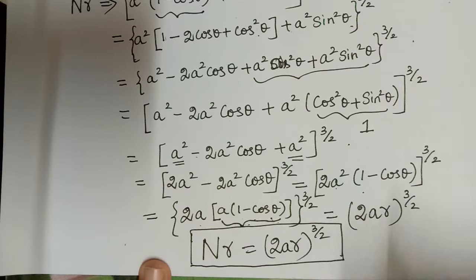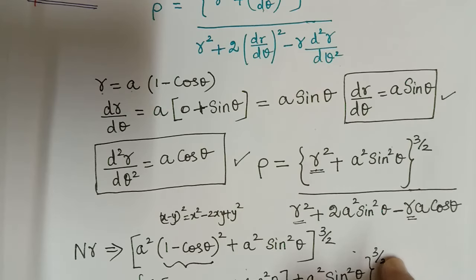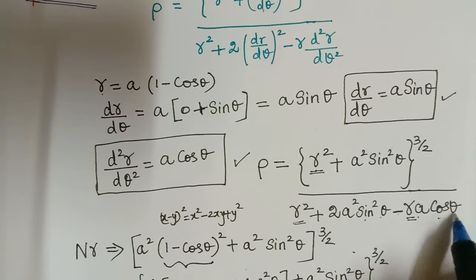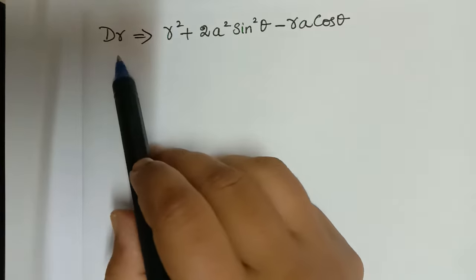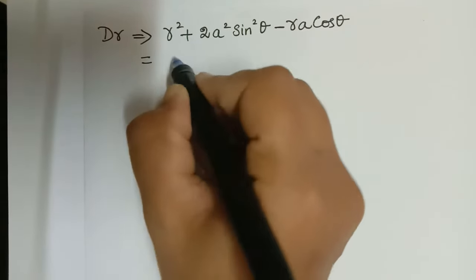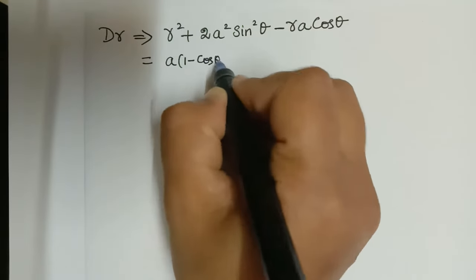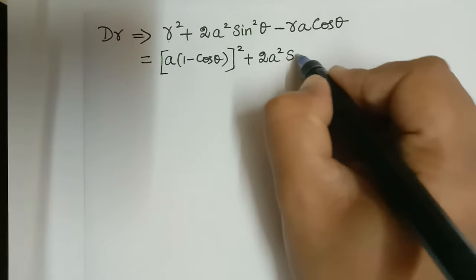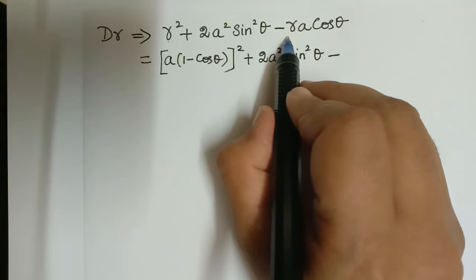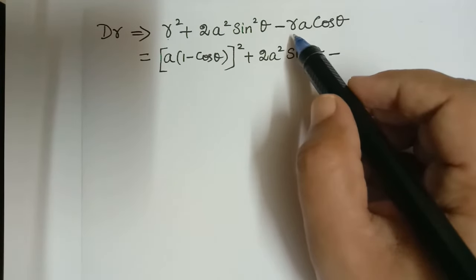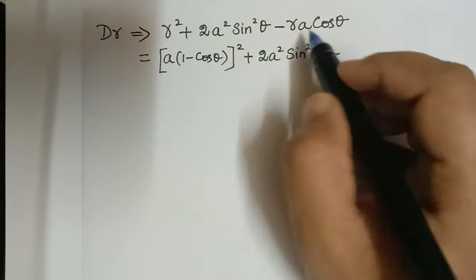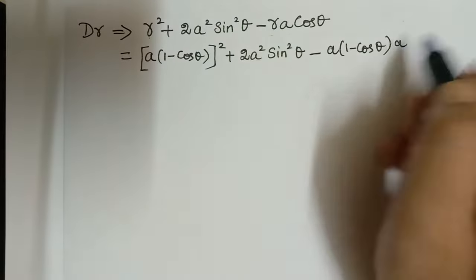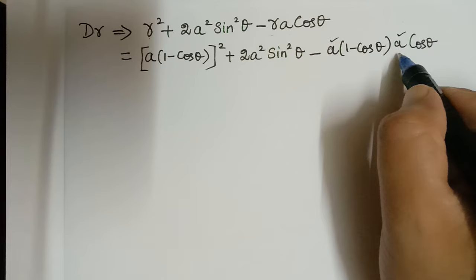Next let us evaluate the denominator: r² + 2a² sin² θ − r·a cos θ. Substituting r = a(1 − cos θ) we get a²(1 − cos θ)² + 2a² sin² θ minus a(1 − cos θ) times a cos θ. This a times a gives a², so the last term is a²(1 − cos θ) cos θ.